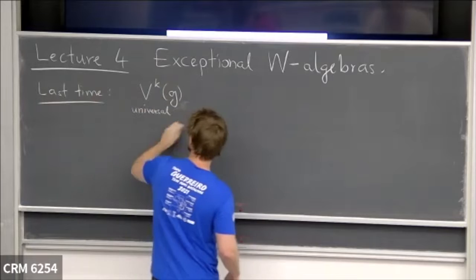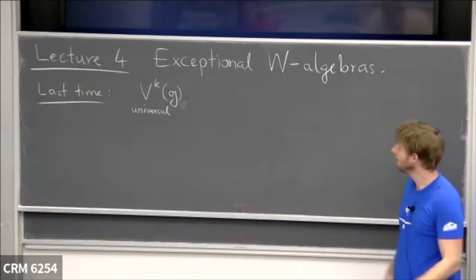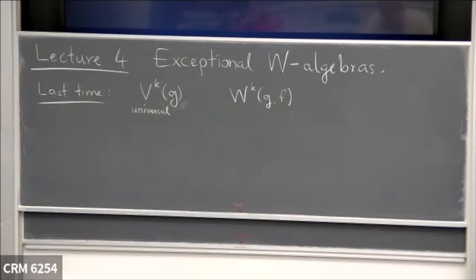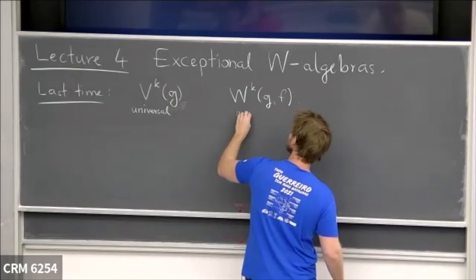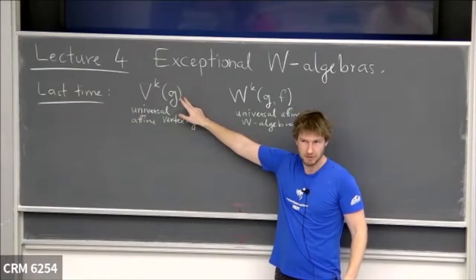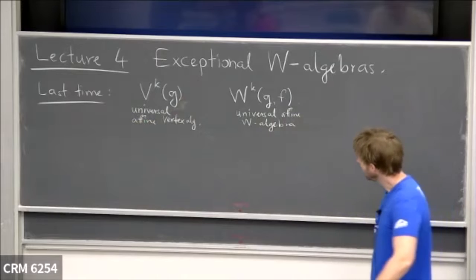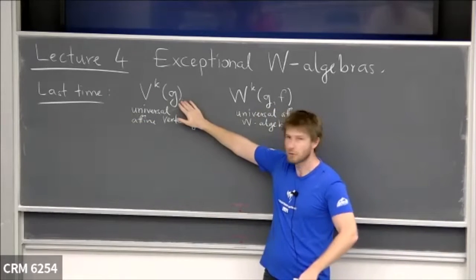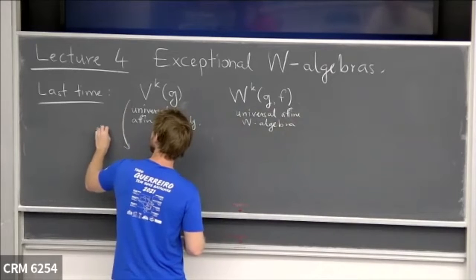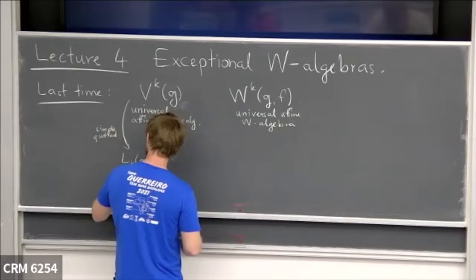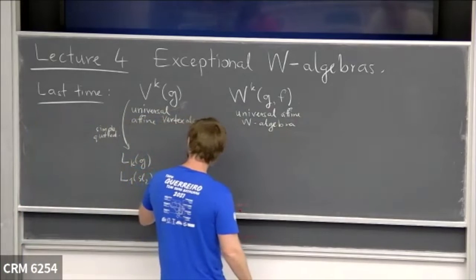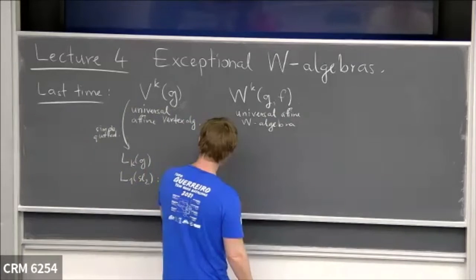In the previous lecture we saw universal affine vertex algebras and their Hamiltonian reduction analogs called affine W-algebras. The Zhu algebra of this vertex algebra is U(g), the universal enveloping algebra of g, and there's a bijection between irreducible representations. When we go down to a simple quotient L_k(g) — for example L_1(sl_2) — there are only two irreducible positive energy modules.